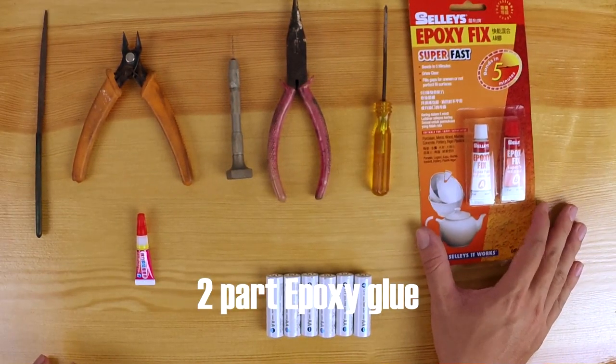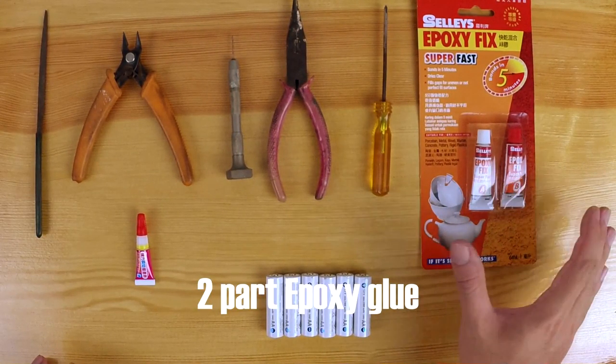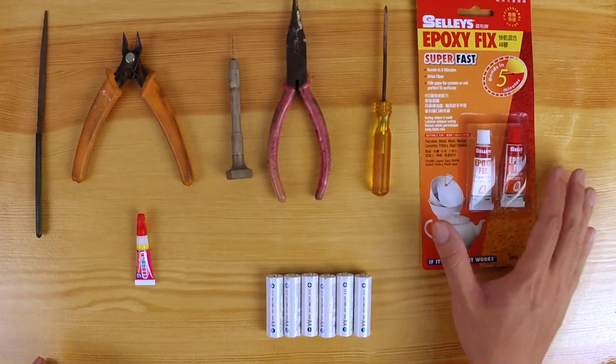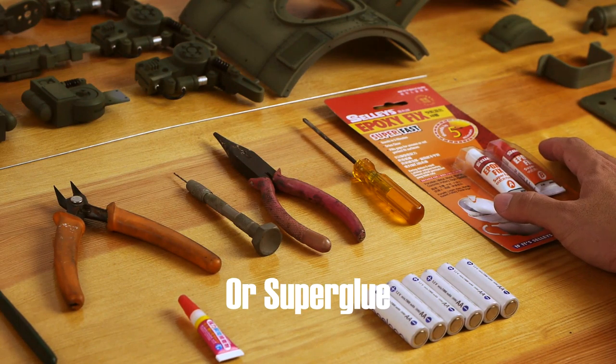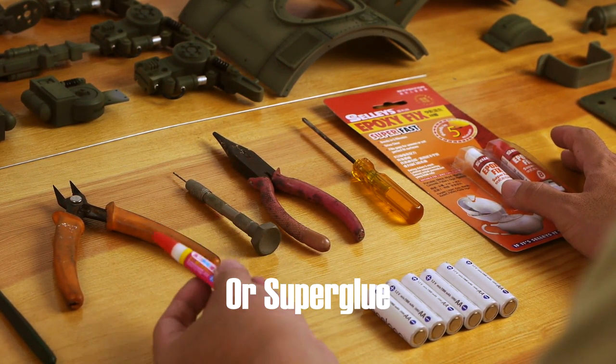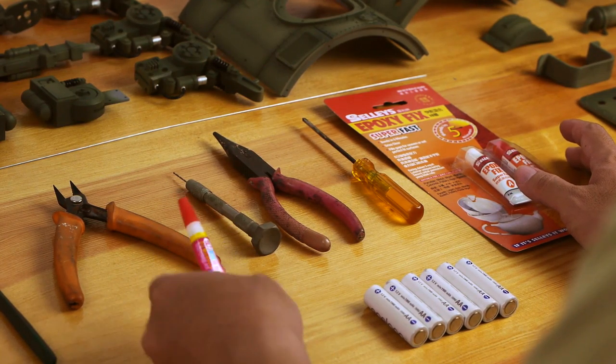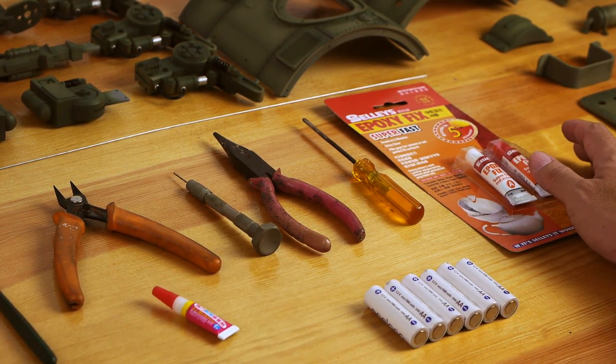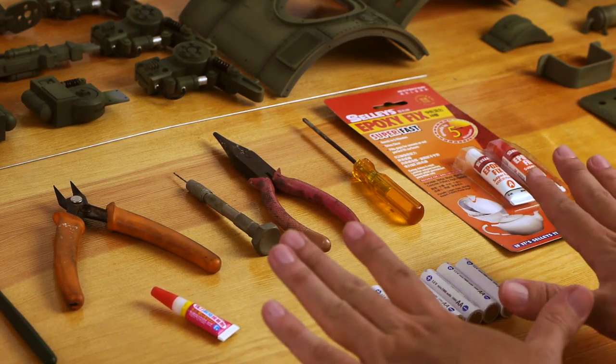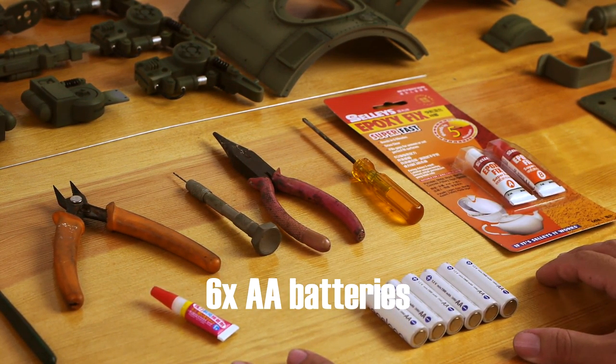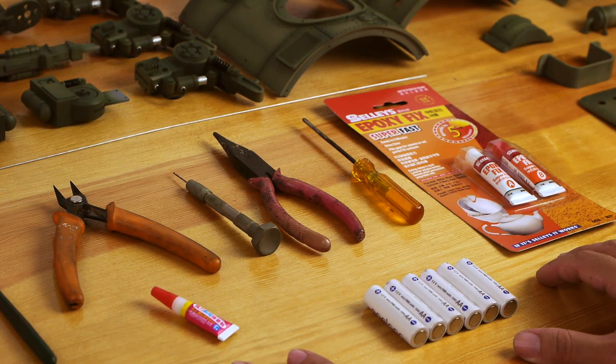Get yourself some 2-part epoxy glue. You can get them in lots of hardware stores. If not, you can get some superglue. I like to get the glue in small tubes because unless you do a lot of modeling, there's a high chance of your glue drying up on you. Get 6 AA batteries ready. I'm using rechargeables and I recommend using rechargeables. Alright, let's get started.